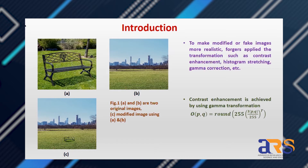In copy-paste forgery, a part of one image is copied and pasted into a different image. Due to different lighting conditions, different reflectance, and different contrast of the two images, inconsistencies are introduced into the tampered image. To cover up these inconsistencies, transformations such as contrast enhancement, histogram equalization, and gamma correction are applied.